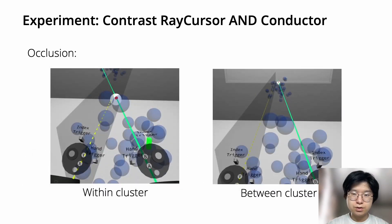Occlusion can happen in two ways: within cluster like this one, and between clusters like this. Factor sizes and densities are the main influences of occlusion, since larger size and higher densities increase the occlusion.